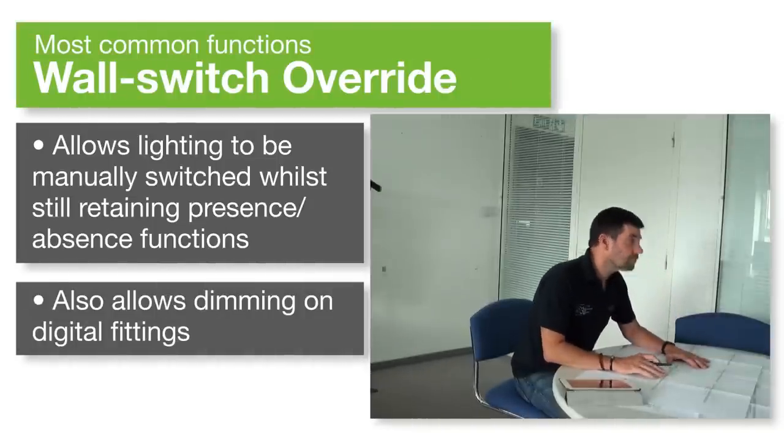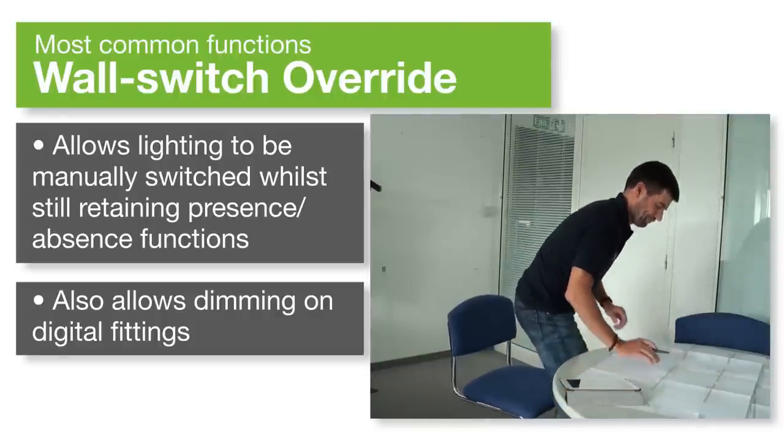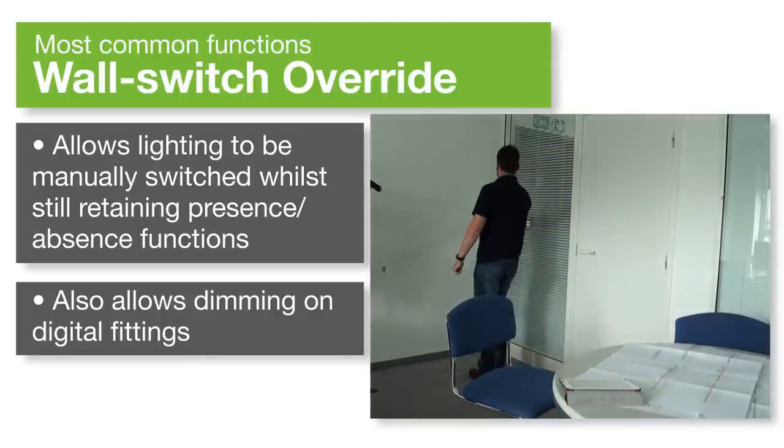Wall Switch Override allows you to temporarily adjust the lighting with a wall switch for specific tasks, whilst retaining Presence or Absence functions.